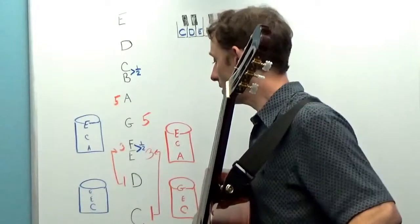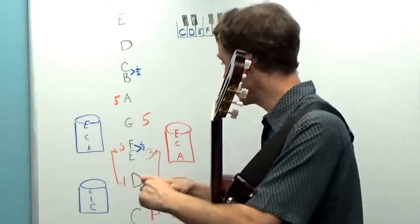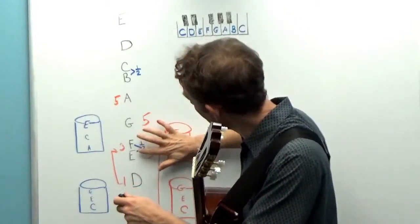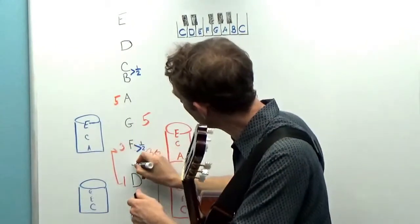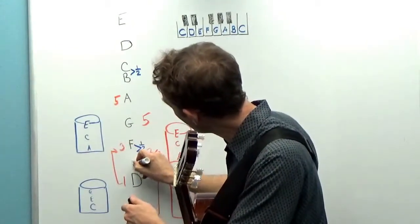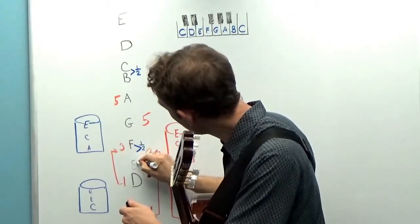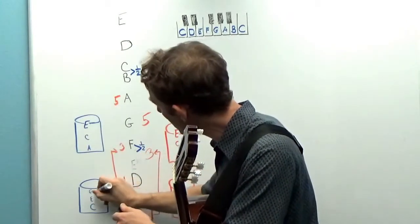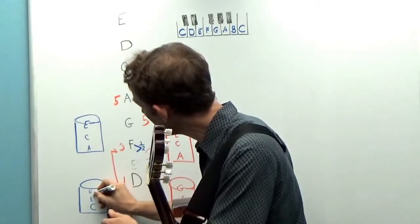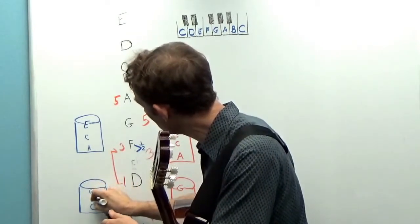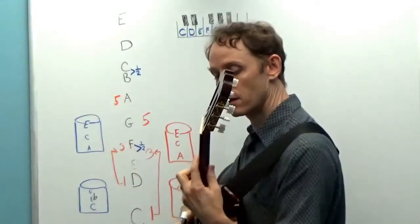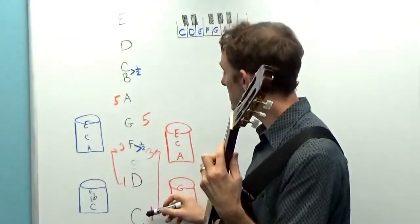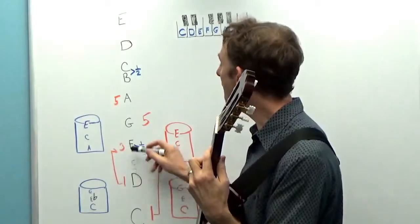However, if we wanted to make a C minor chord, we would need to lower that third down, make it a little bit lower, so it's going to be down here as an E flat. So that's why we would add a flat in to the E of our C minor chord. C E flat G.